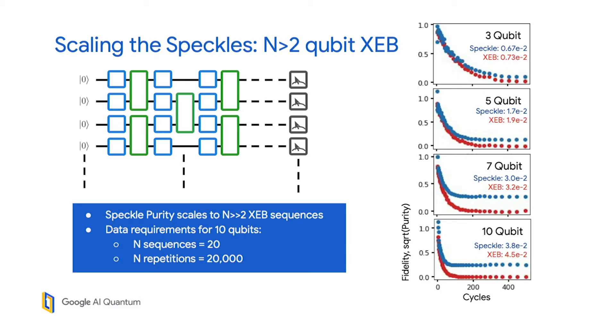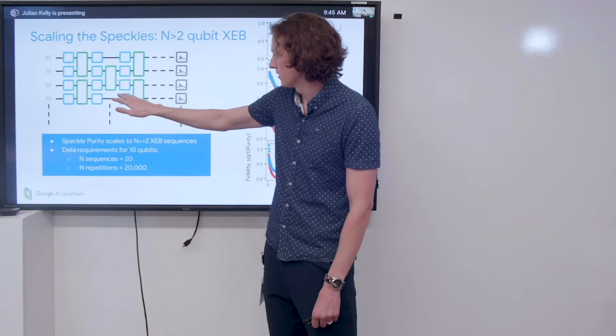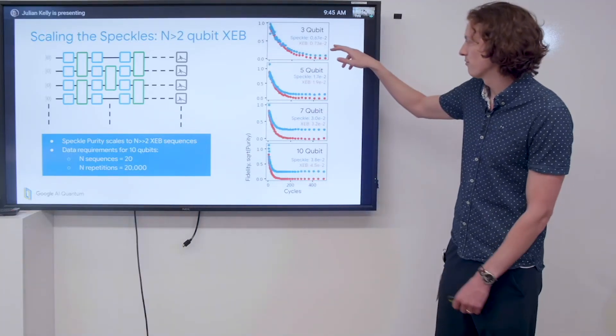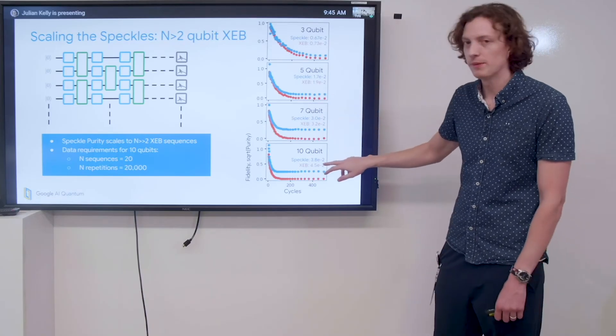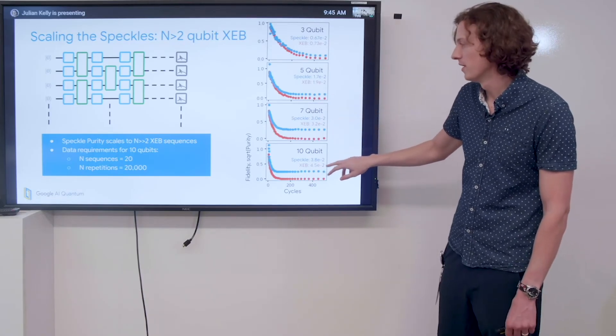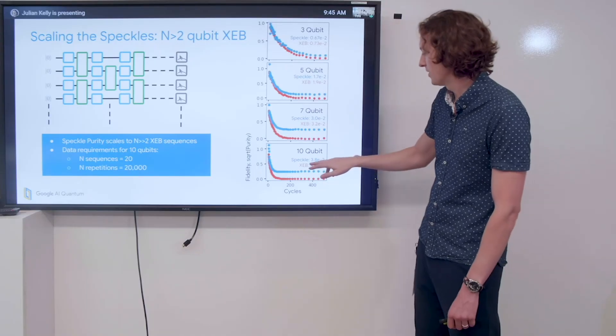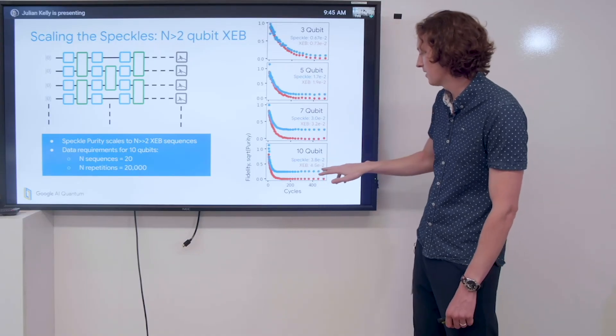I want to now actually show data for scaling the number of qubits up to larger system sizes. We can, for example, extend the XEB protocol to many qubits in a pattern that looks something like this. We can measure for 3 qubits, 5, 7, or all the way up to 10 qubits to directly extract a purity, and we see that this still works. We get nice numbers, nice decays out of this, and we can also compare it to the XEB directly.